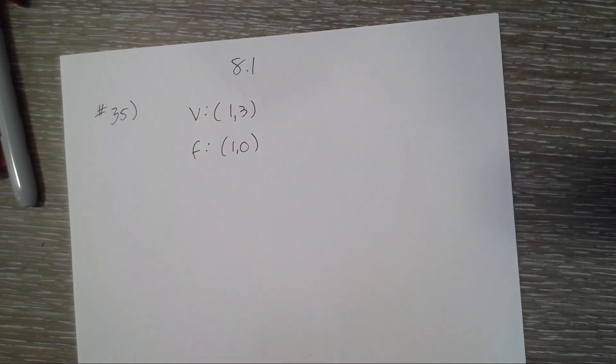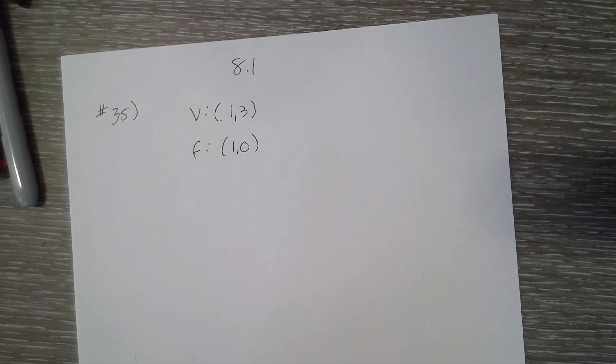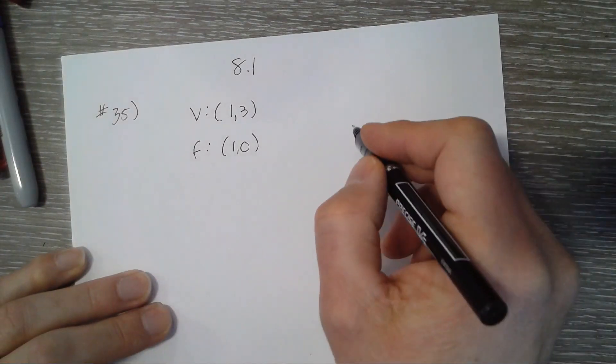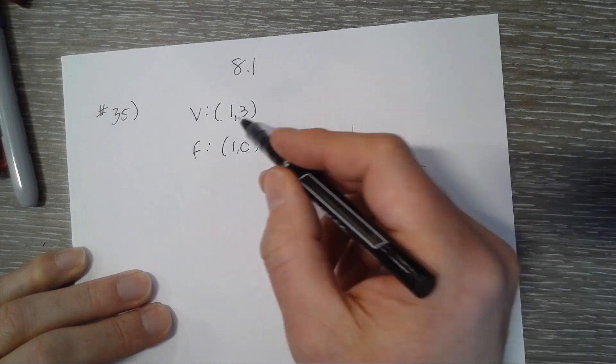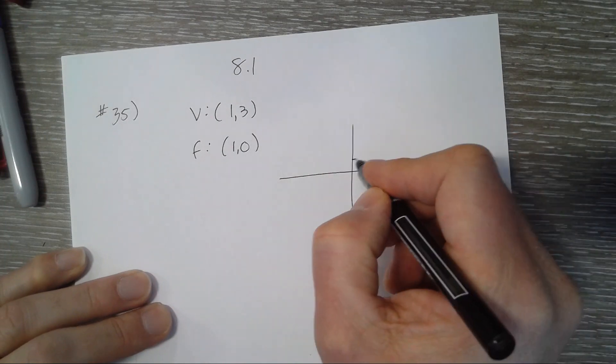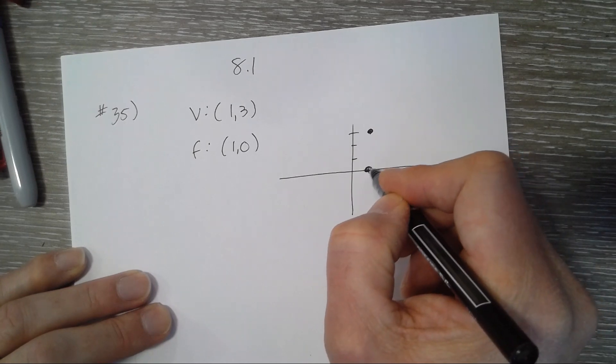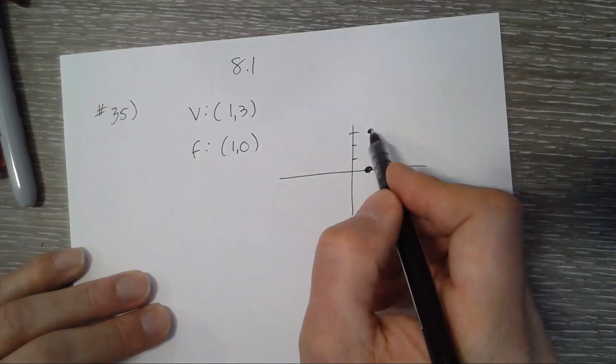Problem 8.1: standard form equation given a vertex and a focus. Let's make a sketch. The vertex is (1,3), the focus is (1,0), and remember the focus is always inside of the parabola, so this is what it looks like.